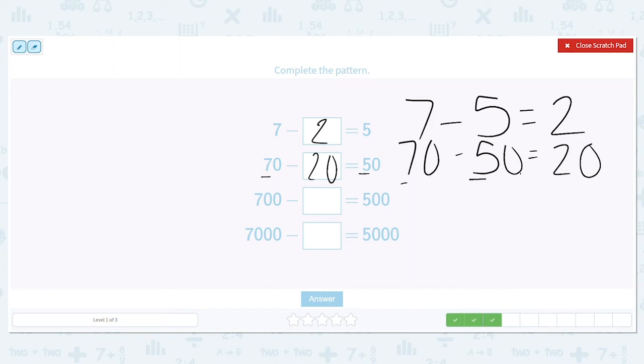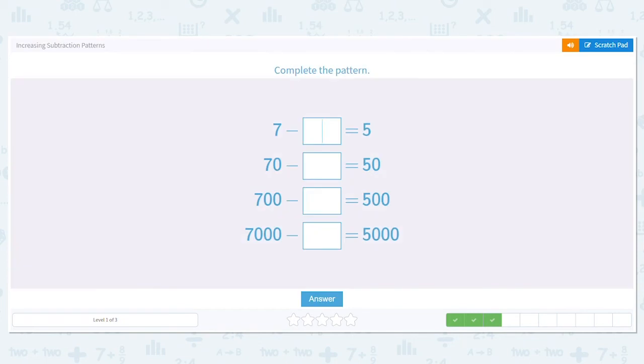So 700 minus what should be 500? 200. And 7,000 minus what should be 5,000? 2,000. See, we save time, but we're still being accurate because we know what our pattern is.